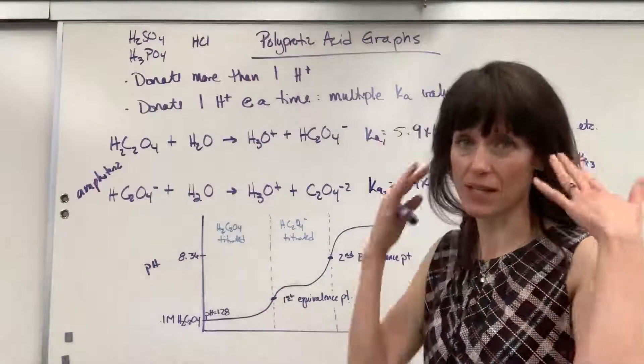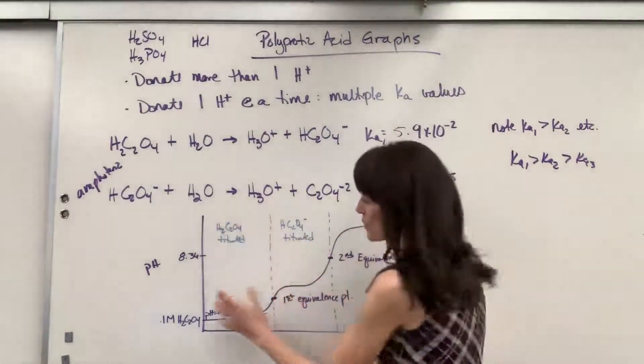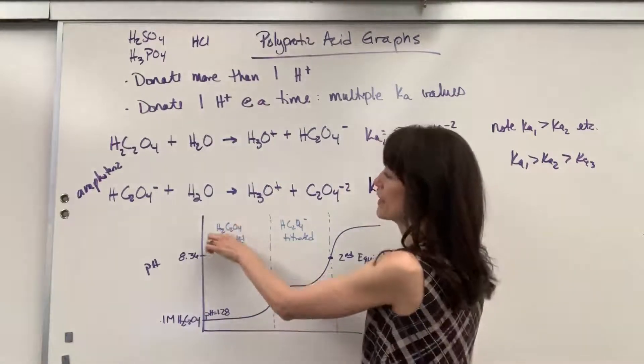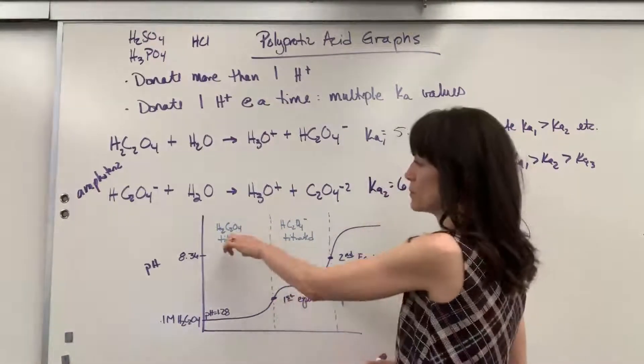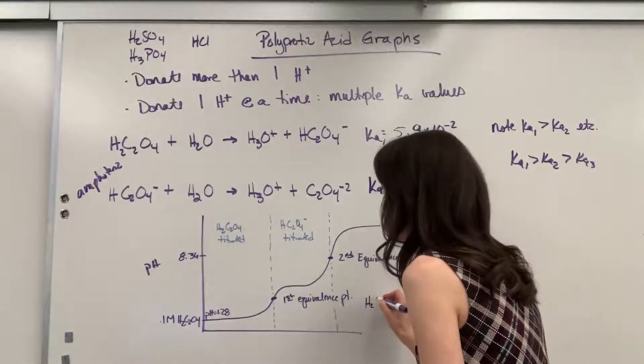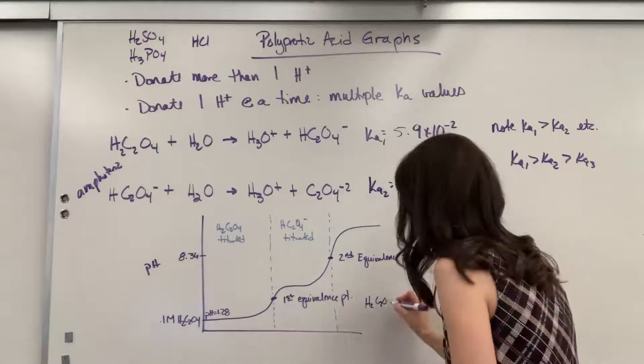Now, here's the significance that I want you to be able to visualize. We are titrating from this point to this point where I drew the line where that first equivalence point is. We're titrating the oxalic acid. And at this point, it is going to be where the moles of our H2C2O4, sorry,